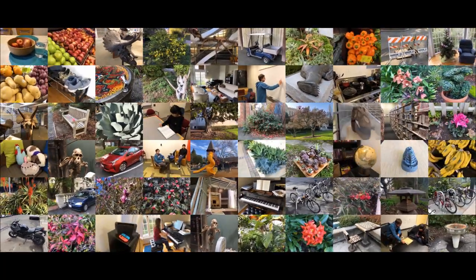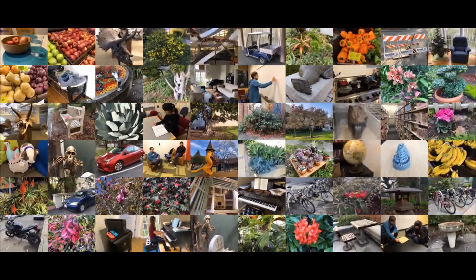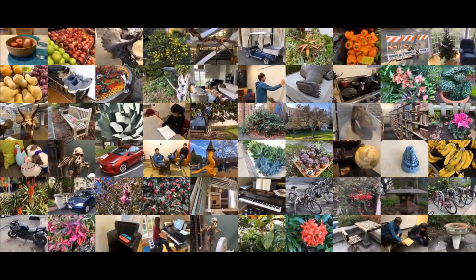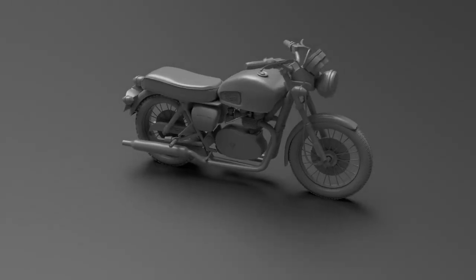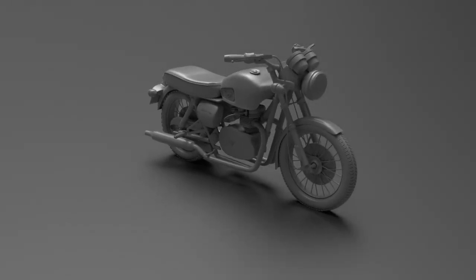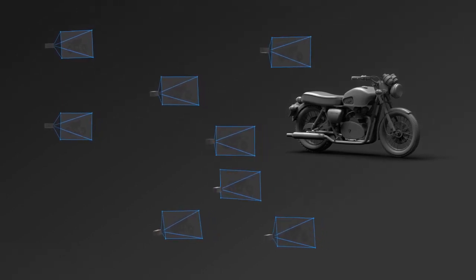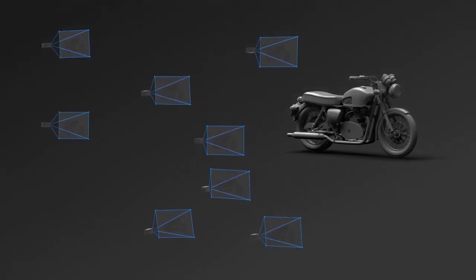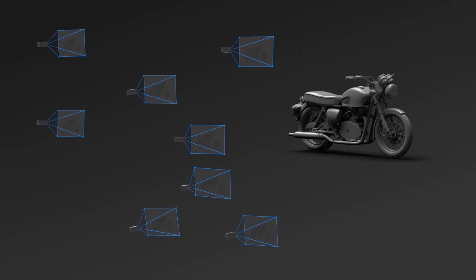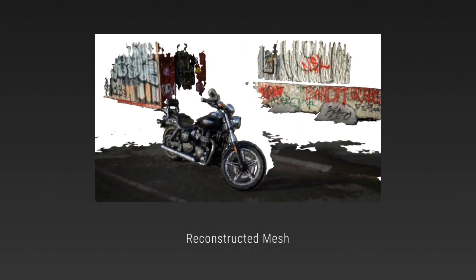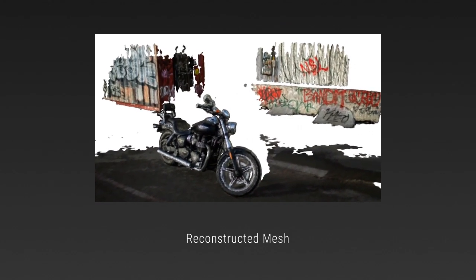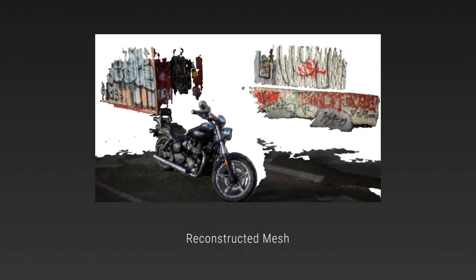Capturing a real-world scene for 3D virtual viewing is currently extremely difficult. Users typically must choose between three strategies. They can capture a sparse and unstructured set of images and use an algorithm relying on global mesh estimation. These are typically slow and prone to unpredictable failures, resulting in a painful trial and error process.